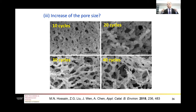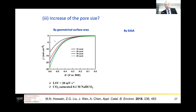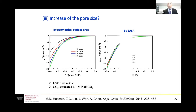To test whether pore size affects performance, we changed the number of electrochemical cycles from 10 to 30, which changes the pore size. The current density calculated against the geometric surface area shows a slight increase, but when normalized against the ECSA, the activity is very similar, indicating pore size change is not the dominant factor.